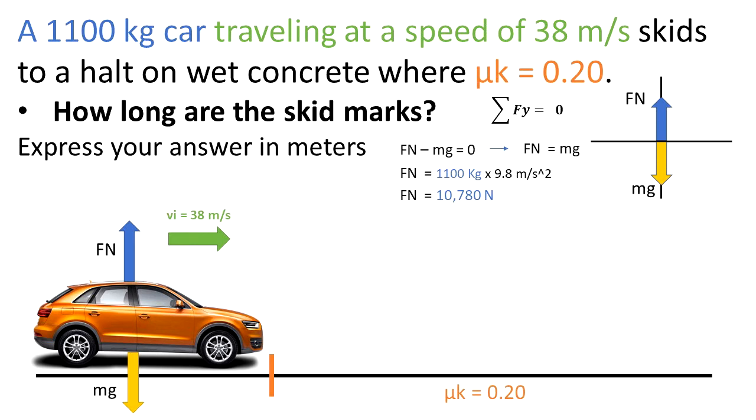From the givens, we know that the mass is 1,100 kg, and gravity on Earth is 9.8 meters per second squared. We multiply and find that the normal force is 10,780 N. I just calculated the normal force because this is going to be important for further calculation.